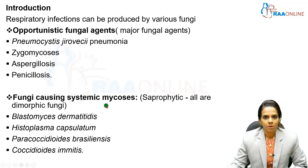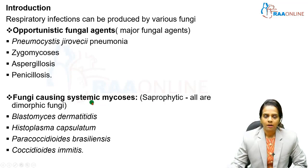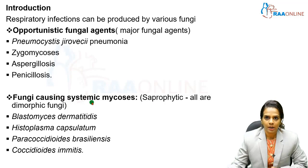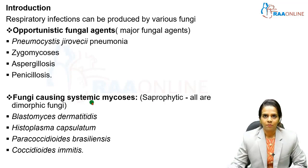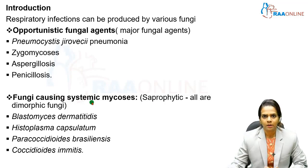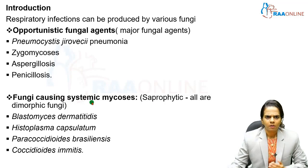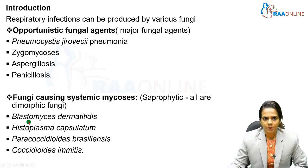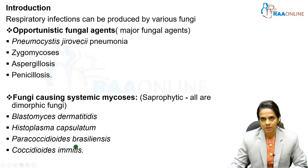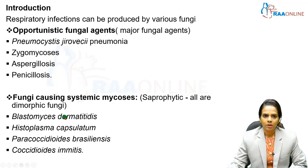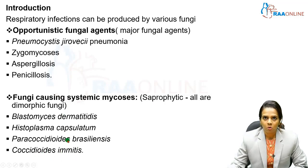Fungi causing systemic mycosis involve multiple organs and human infections occur by inhalation of their spores. Usually these are saprophytic and present abundantly in the environment. All are dimorphic fungi — that is, they can grow as a mold form as well as a yeast form at two different temperatures. The agents which cause systemic mycosis are Blastomyces dermatitidis, Histoplasma capsulatum, Paracoccidioides brasiliensis, and Coccidioides immitis.